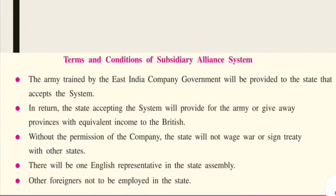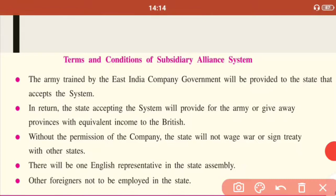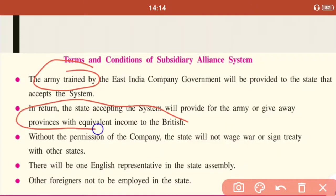Let us discuss the terms and conditions of the Subsidiary Alliance System. According to this system, if a state accepted the system, an army trained by the East India Company would be provided to that state. In return, the state accepting the system would provide the army or give away provinces with equivalent income to the Britishers.